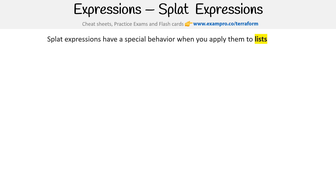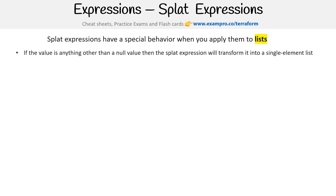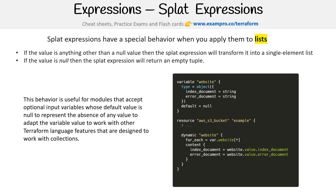Let's look at splat expressions when applying them to lists. If the value is anything other than null, the splat expression will transform it into a single-element list. If the value is null, the splat expression will return an empty tuple. This behavior is useful for modules that accept optional input variables whose default value is null, to represent the absence of any value and adapt the variable to work with other Terraform language features designed to work with collections.